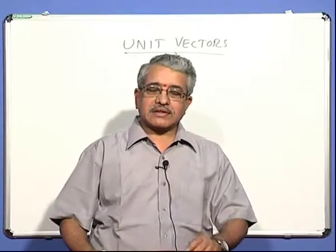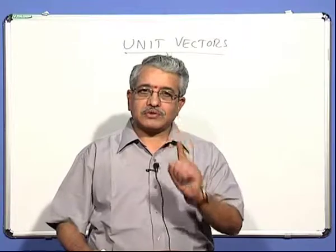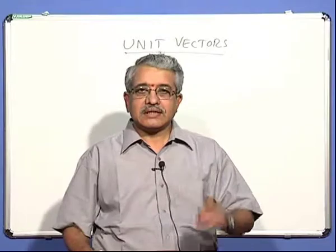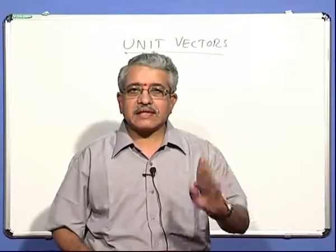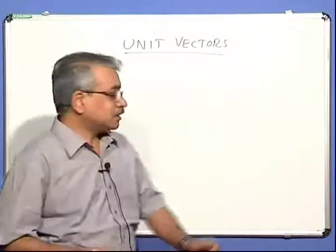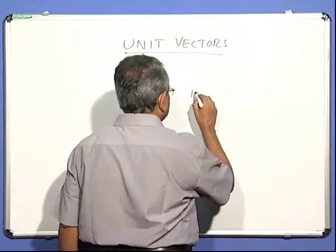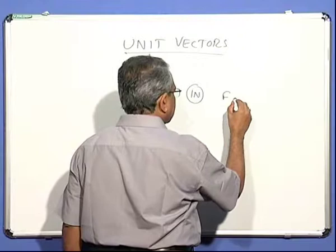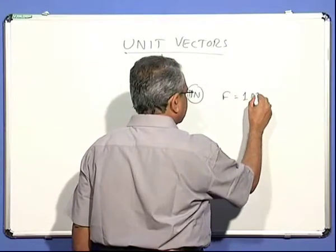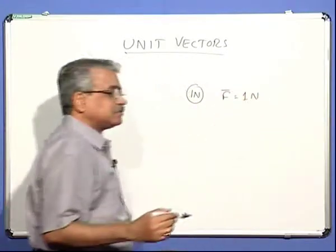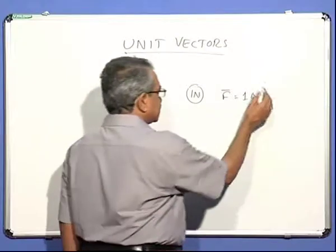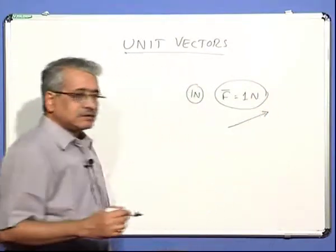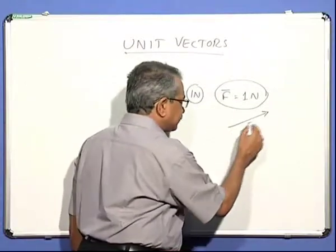If any vector has a magnitude of one unit, whatever direction it has, it is called the unit vector in that direction. For example, suppose you have a one Newton force — a force with one Newton magnitude. Force is a vector quantity. Such a force may be in some direction, and then we say this vector is the unit vector in that direction.